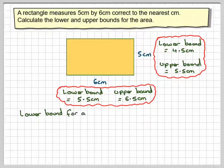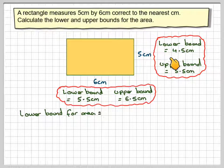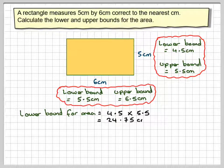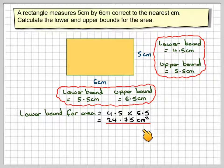The lower bound for the area, we take the lower bound for here and the lower bound here, so we work out 4.5 times 5.5. That's going to give me 24.75cm squared.